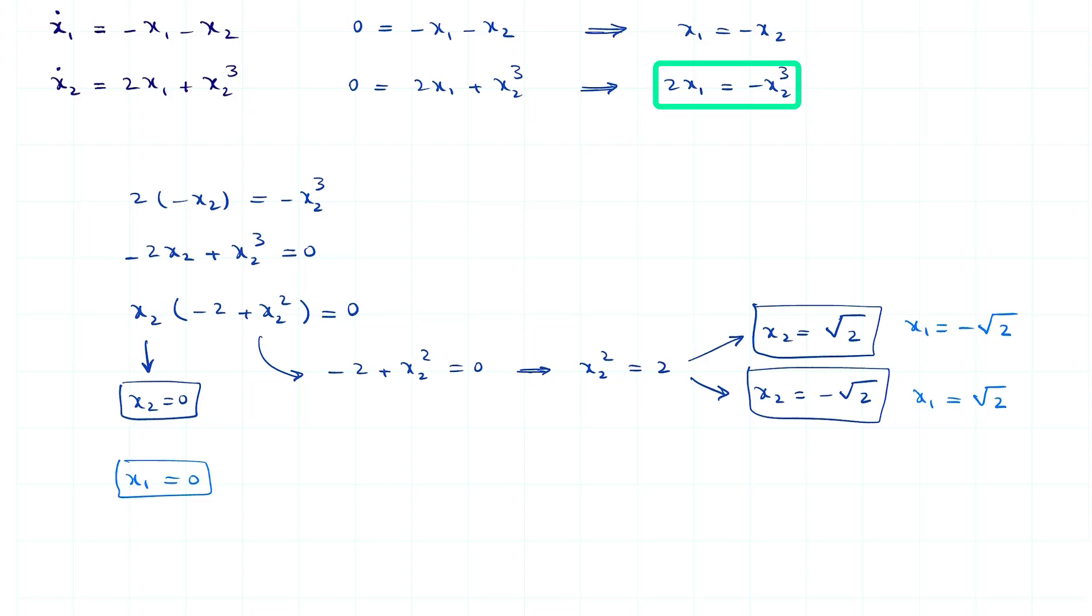Let's try using the second equation and confirm the value we find for x1 is the same as the value we obtain when we use the first equation. So, the second equation is 2x1 equals minus x2 cubed and then 2x1 equals minus minus square root of 2 to the power of 3 which is equal to minus minus 2 times square root of 2 which is equal to 2 times square root of 2. So, 2x1 equals 2 times square root of 2. This actually means that x1 equals square root of 2. So, you see that the value we obtain for x1 is the same as before.